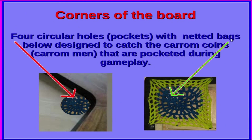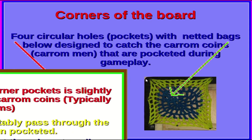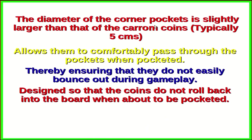At the corners of the board there are four circular holes called pockets, provided with netted backs on the lower side. These are designed to catch the carom coins that are pocketed during play. The diameter of the corner pockets is slightly larger than that of the carom coins — typically about 5 cm — so coins can comfortably pass through and do not easily bounce out or roll back into the board.